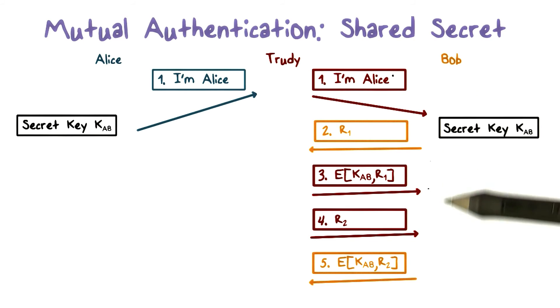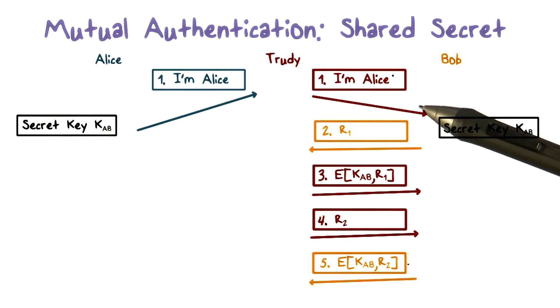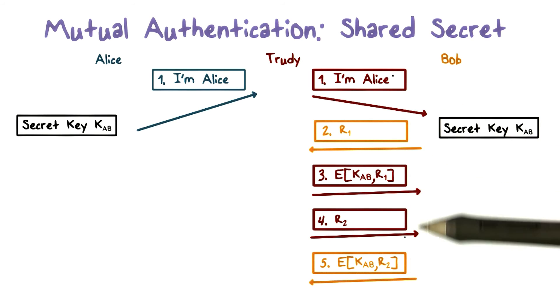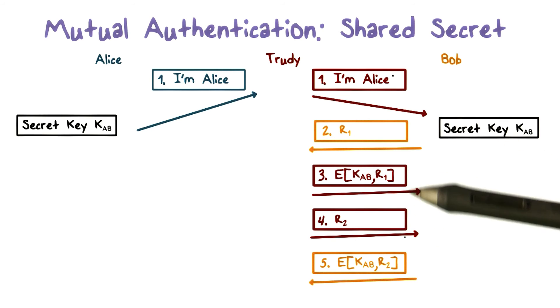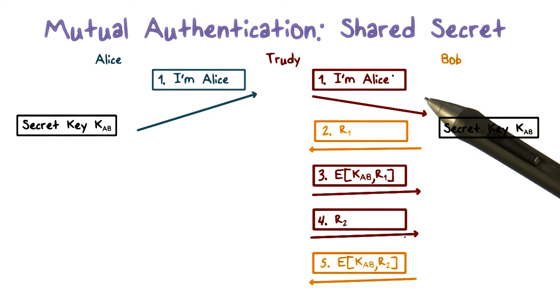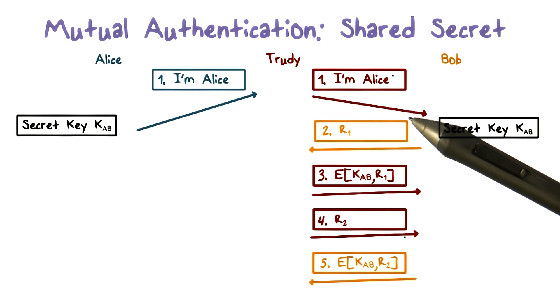To recap, first of all, the messages that we send over the internet can be captured by intruder Trudy. And our job is to prevent these messages being replayed so that Trudy can impersonate Alice and Bob. And in order to do that, the random challenges R1 and R2 should really be not easily repeatable or predictable.